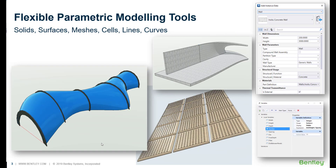We'll take a look at our flexible parametric modeling tools. These modeling tools consist of solids, surfaces, meshes, lines, cells, curves, and so on. We tend to use these tools when the object-oriented tools don't give us the free-form flexibility that we need. Once placed, we can add information properties to these objects as well as symbolization.